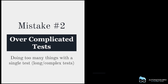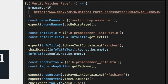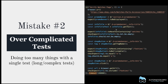Mistake number two is writing over-complicated tests — basically doing too many things with a single test, which makes it long as well as complex. Here I have a simple test verifying the watches page, but as you can see it's trying to do too many things and it's really hard to understand what this test is trying to do. Notice the timeout here — 180,000 milliseconds, which is three minutes. I have seen timeouts even longer than this: five or ten minutes.